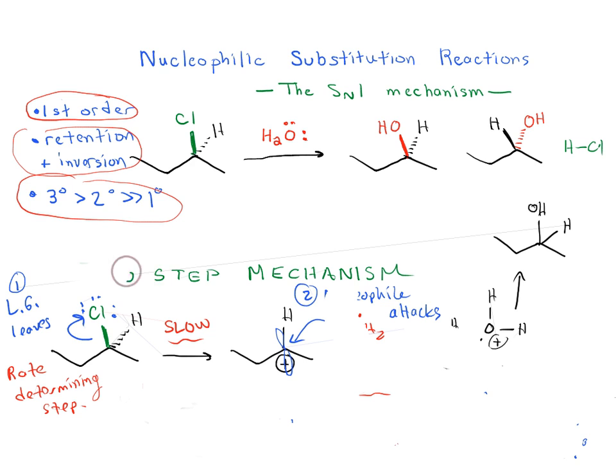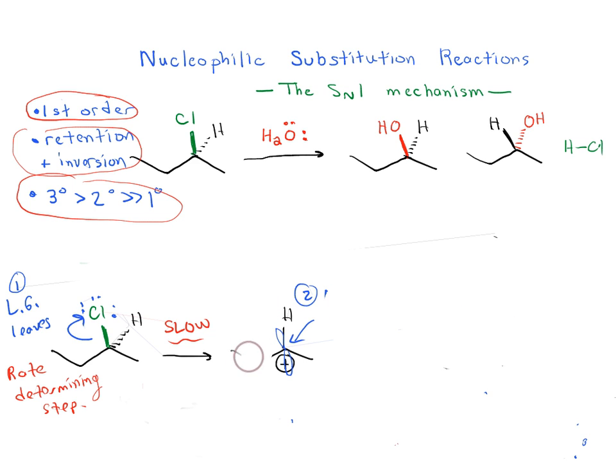We're going to draw out this carbocation in a slightly different way. Let's try and draw it out in three dimensions. This is our carbocation. If you remember, a carbocation is sp2 hybridized. That central carbon is sp2 hybridized and it's what we call trigonal planar. It has an empty p orbital that is not hybridized, an unhybridized p orbital. It's flat like a coin.